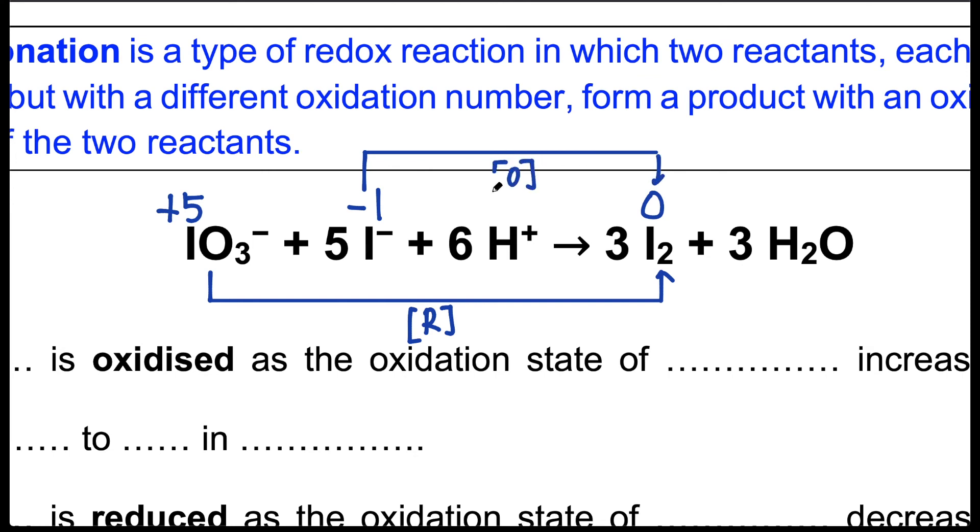Going from minus 1 to 0, iodide ions are being oxidized. What we see here is that these two reactants form the same product in which the oxidation state 0 is in between that of plus 5 and minus 1. So this is comproportionation. Let's fill in the blanks below.